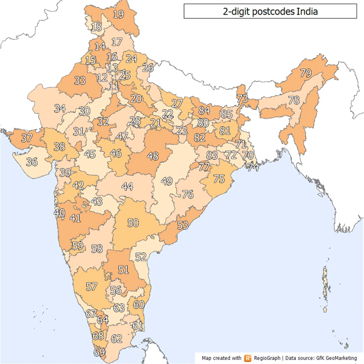Each PIN code is mapped to exactly one delivery post office, which receives all the mail to be delivered to one or more lower offices within its jurisdiction, all of which share the same code. The delivery office can either be a general post office, a head office, or sub-office, which are usually located in urban areas. The post from the delivery office is sorted and routed to other delivery offices for a different PIN, or to one of the relevant sub-offices or branch offices for the same PIN. Branch offices are located in rural areas and have limited postal services.